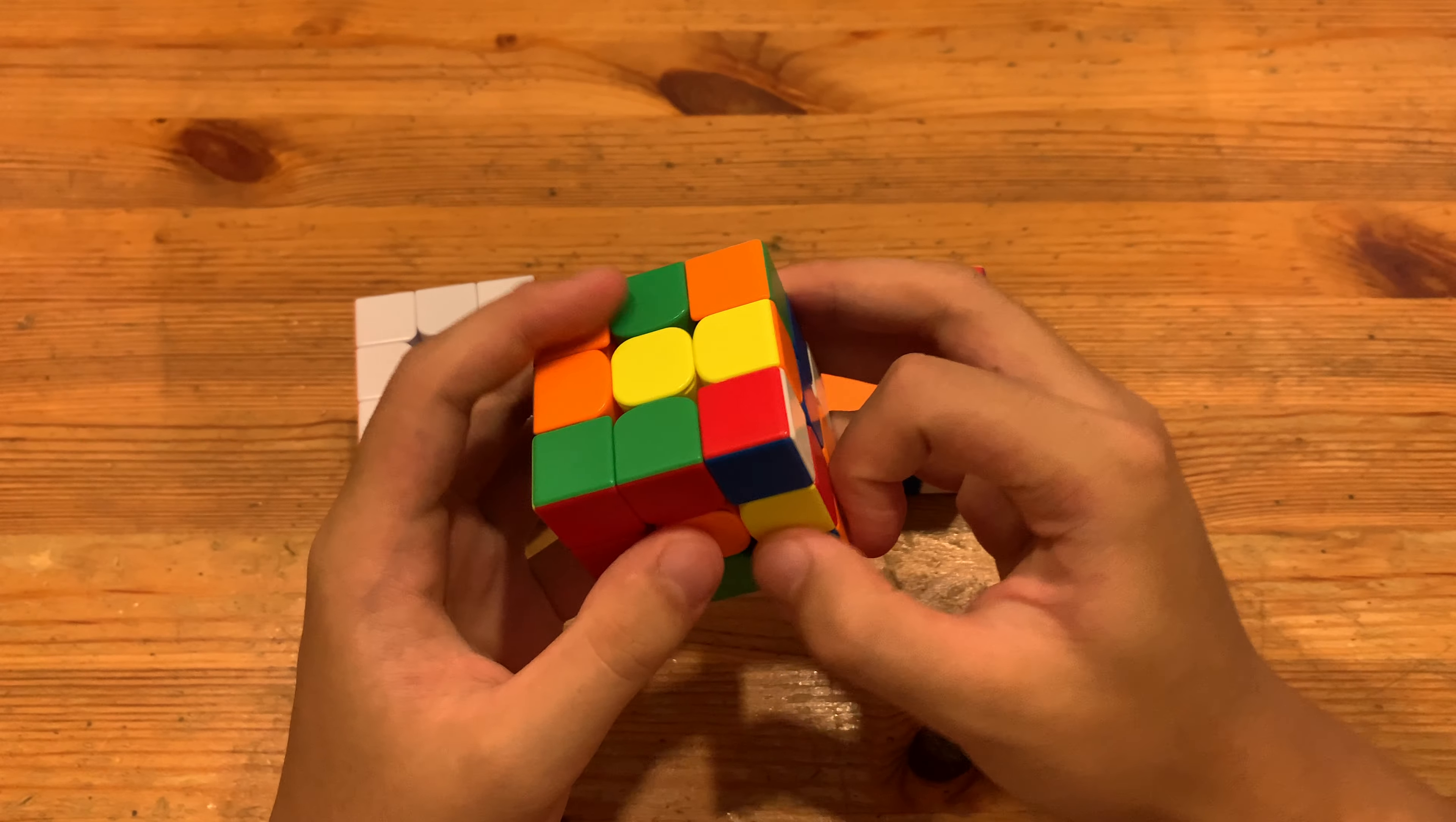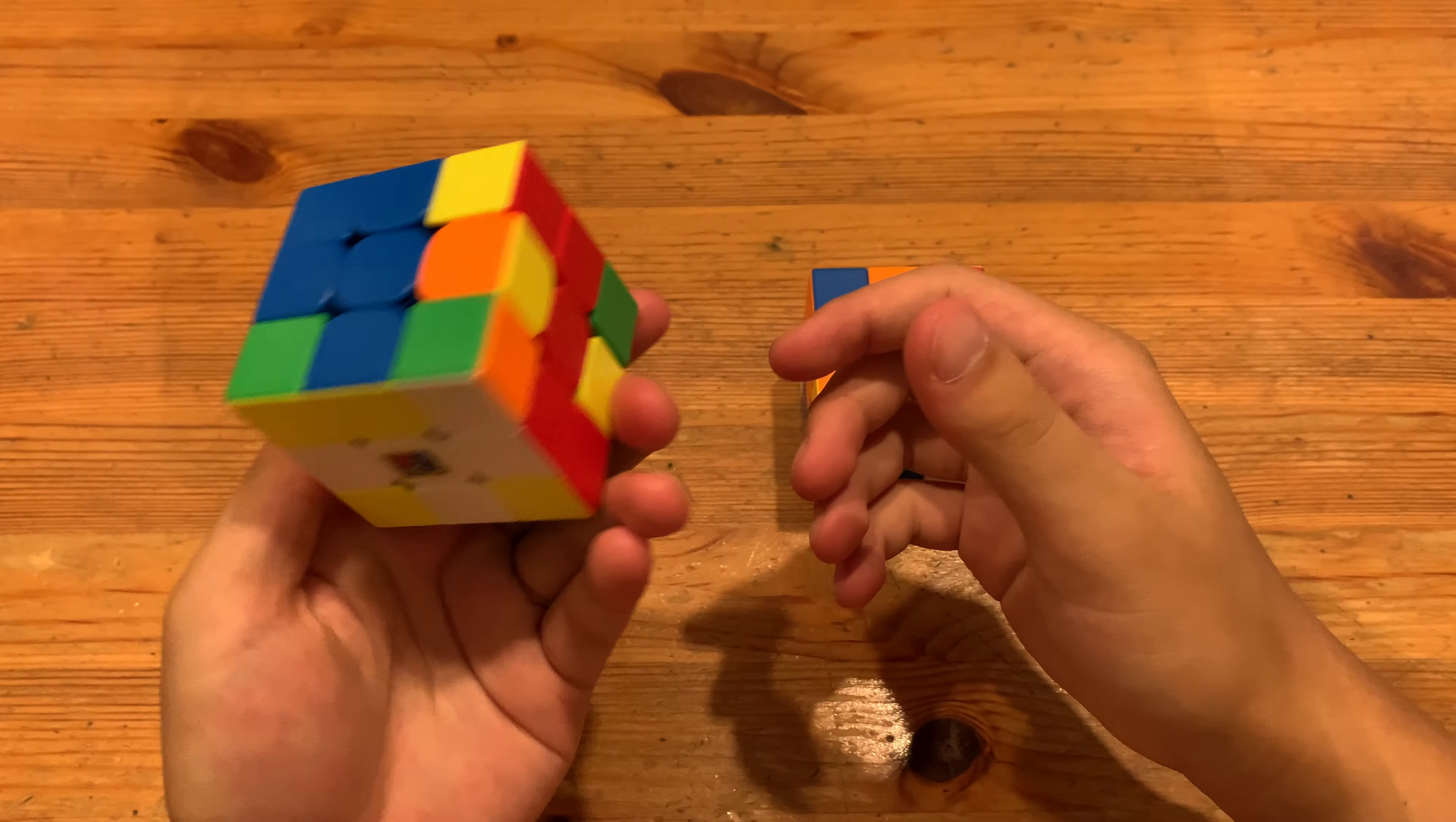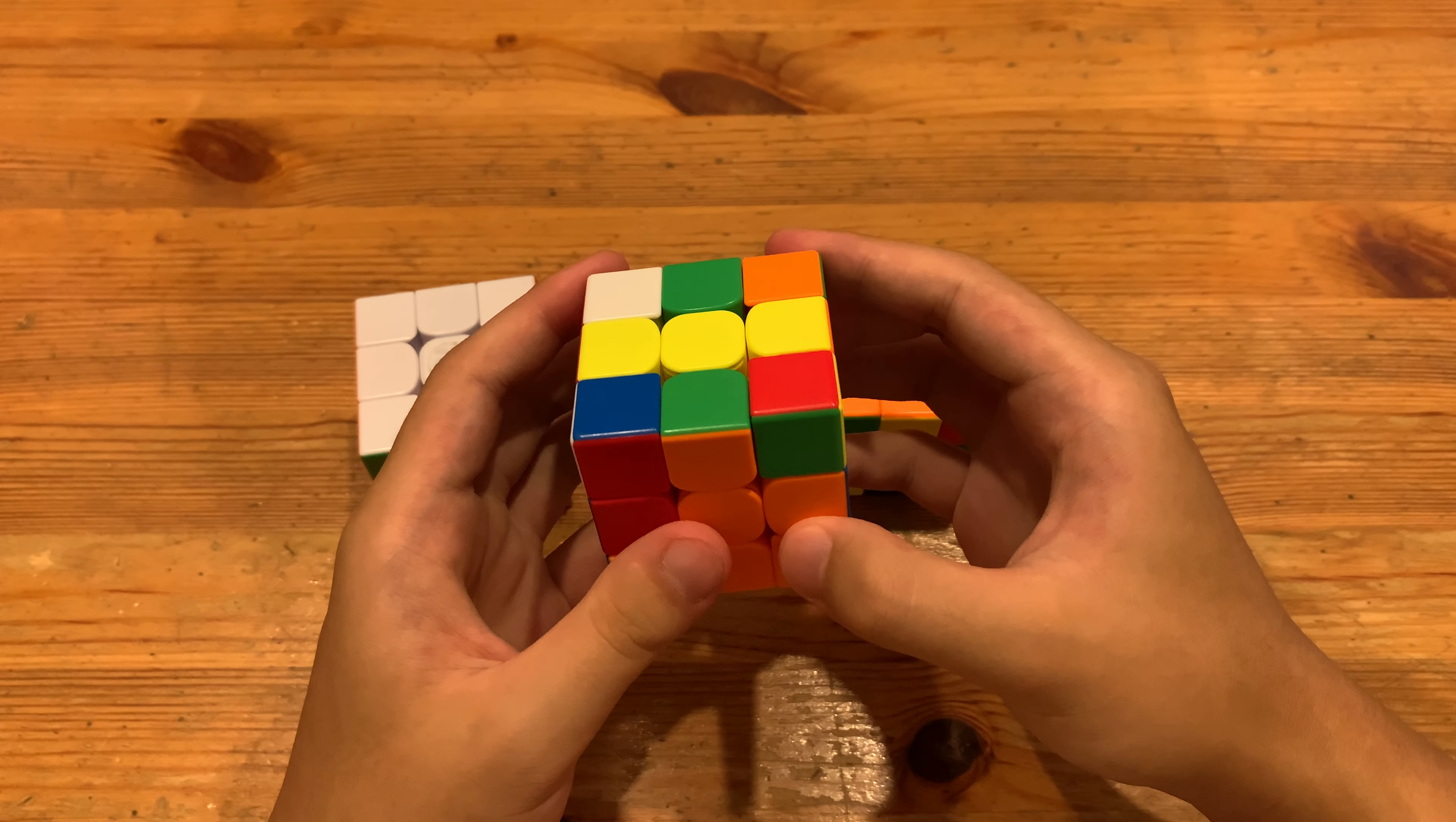And then here I'll do D2U F', I mean F and then D' R U2 R' to insert this first pair like that.